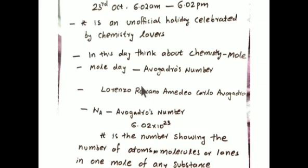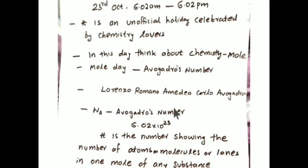Who is Avogadro? He is an Italian scientist. His full name is Lorenzo Romano Amedeo Carlo Avogadro. Avogadro's number is represented as Nₐ, and his number is 6.02 × 10²³.